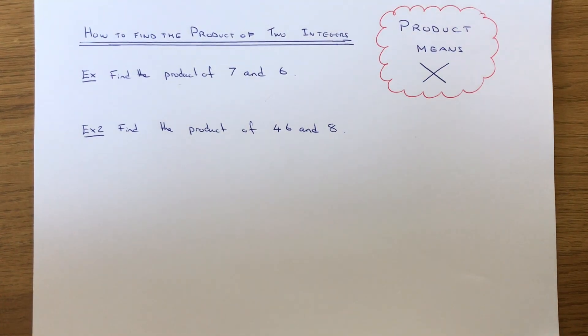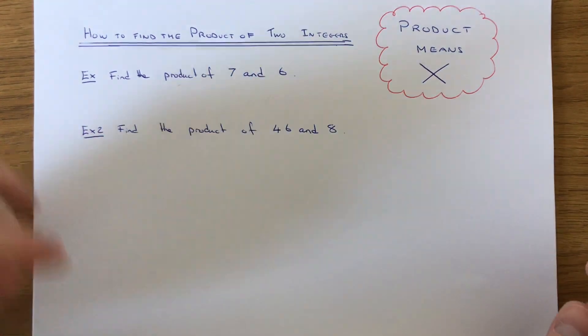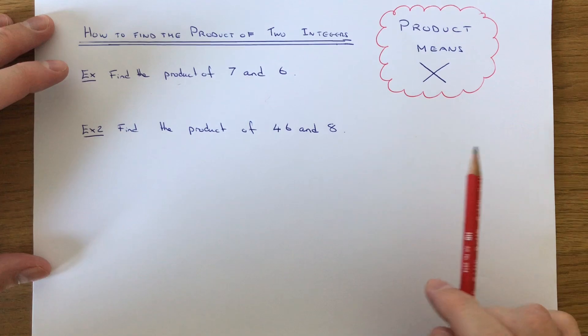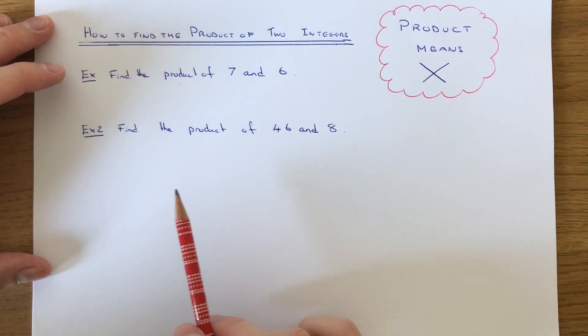Hi, welcome back. This is Maths3000. Today I'm going to show you how to work out the product of two integers. Integers are whole numbers.